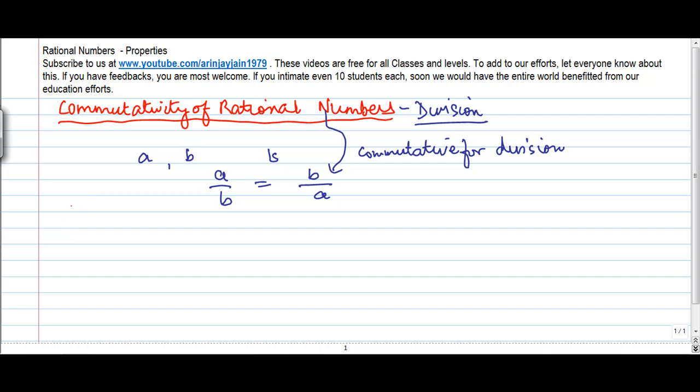Let's take two rational numbers. Again, we have been taking 3 by 8 and 4 by 9. So 3 by 8 divided by 4 by 9. We take this on the left hand side and on the right hand side we take 4 divided by 9 divided by 3 divided by 8.